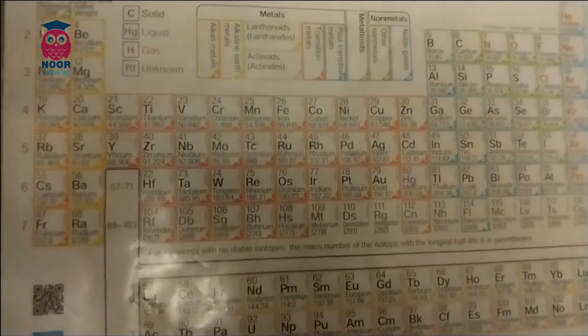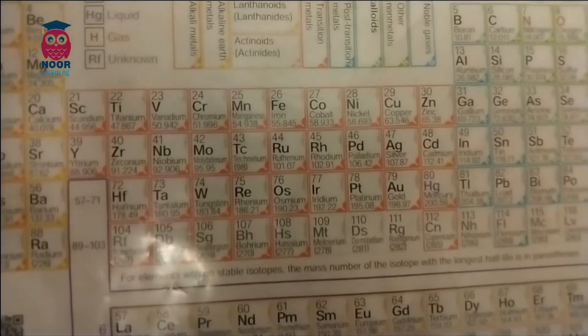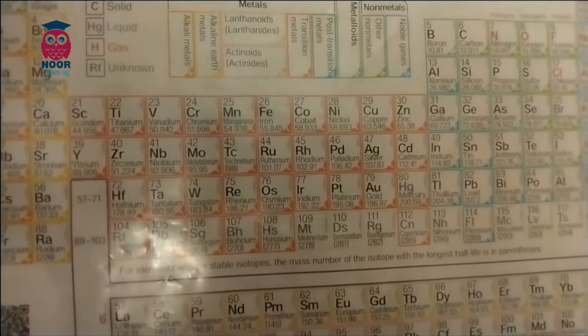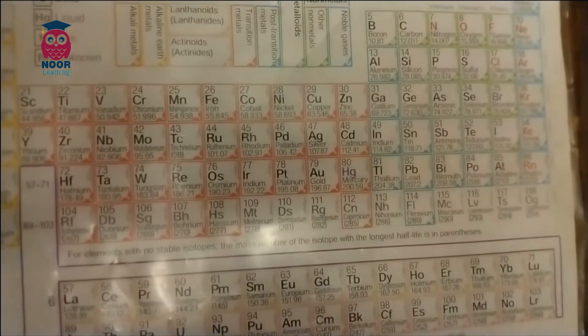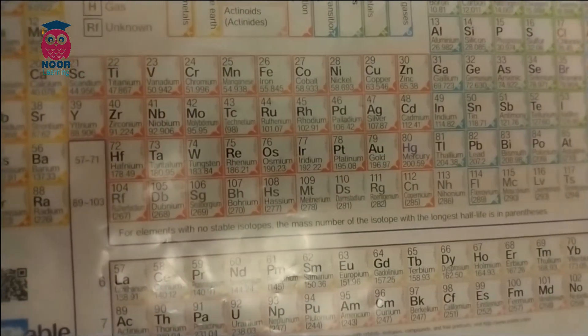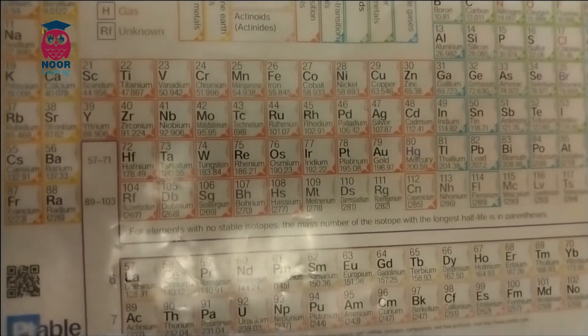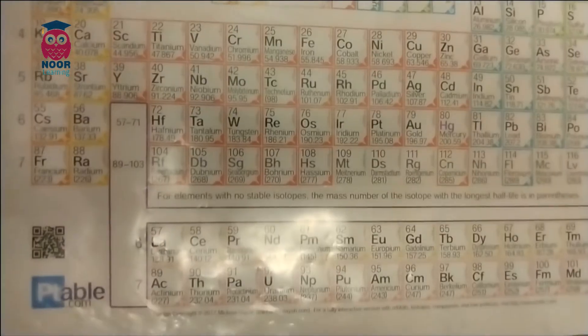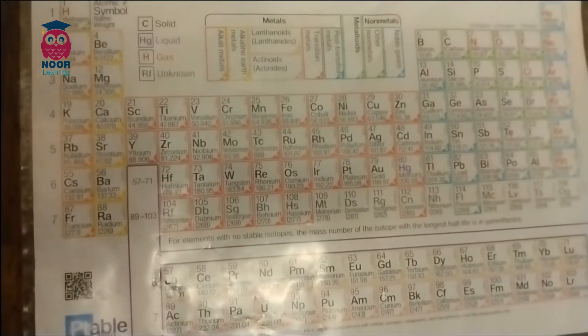Hafnium, tantalum, and tungsten, then rhenium. Then osmium, iridium, platinum, gold to make you rich till you grow old. Mercury to tell you when it's really cold. Thallium, then lead and bismuth for your tummy.